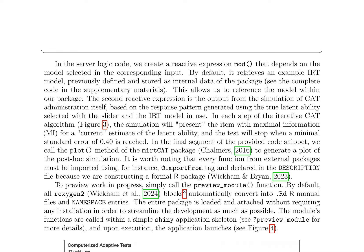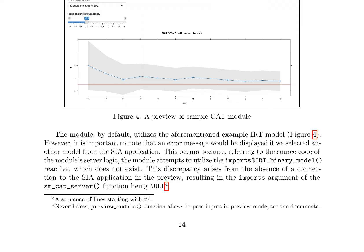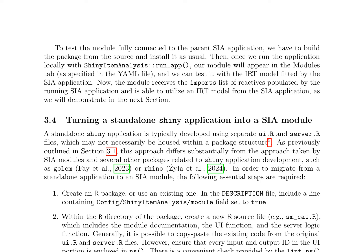To preview the work in progress, the preview_module function can be called, which loads and attaches the entire package without requiring installation. This function utilizes ROxygen2 blocks to automatically convert into R manual files and namespace entries. The module's functions are called within a simple Shiny application skeleton and upon execution the application launches. However, if an error message is displayed when selecting another model from the SIA application, it is due to the absence of a connection to the SIA application in the preview, resulting in the imports argument of the sm_CAT_server function being null. Nevertheless, the preview_module function allows passing inputs in preview mode. To test the module fully connected to the parent SIA application, the package must be built from source and installed as usual.